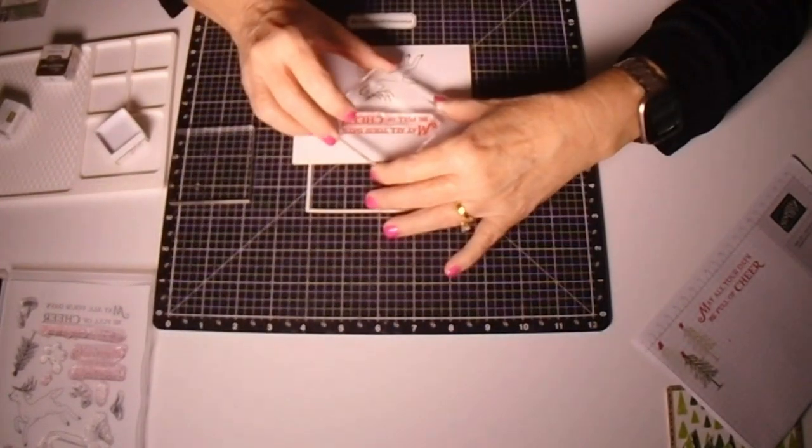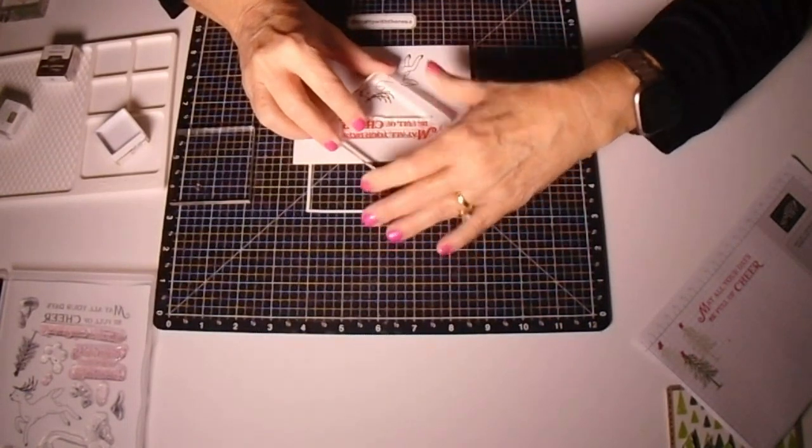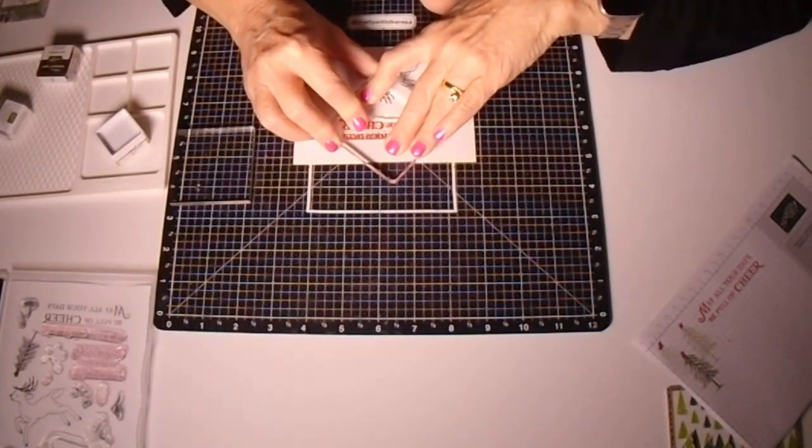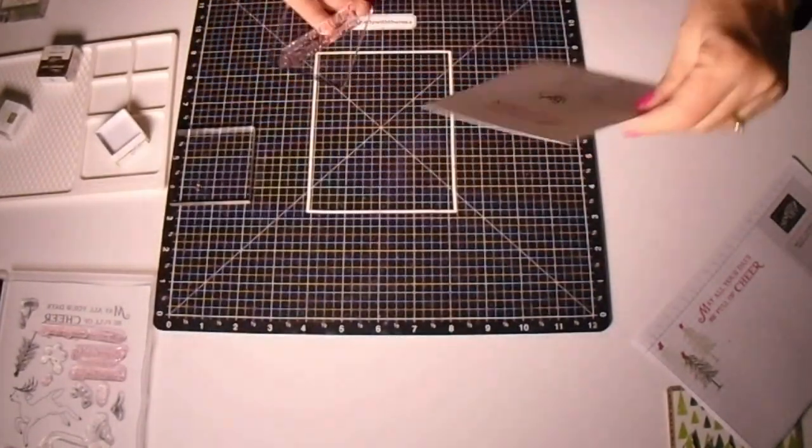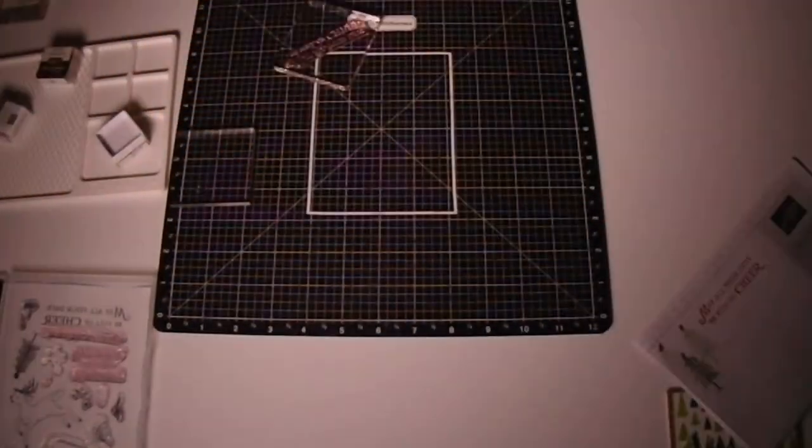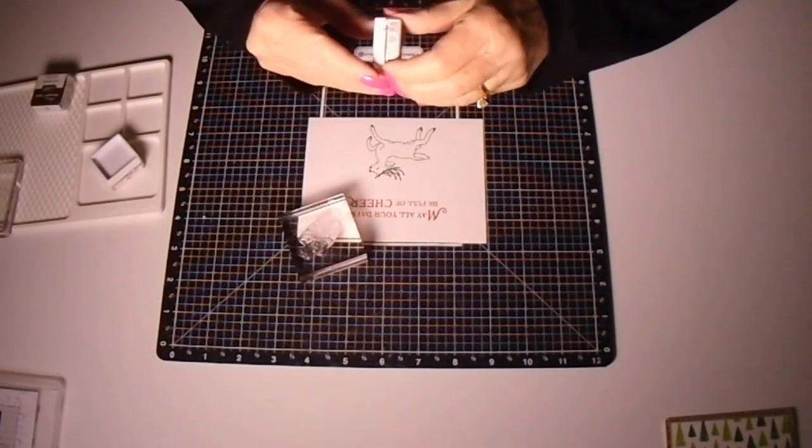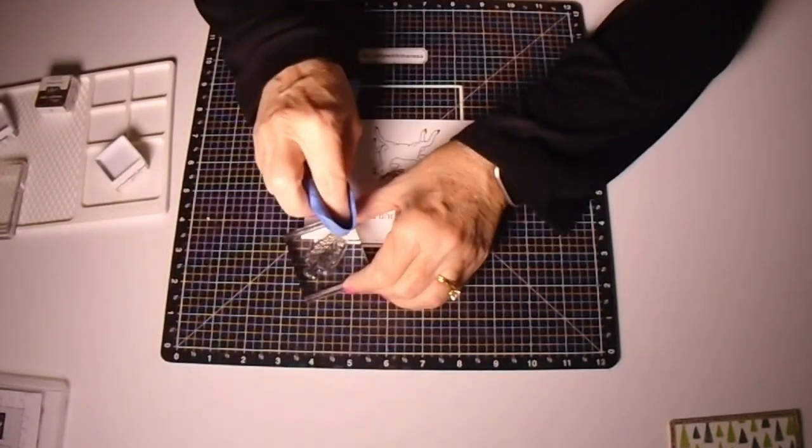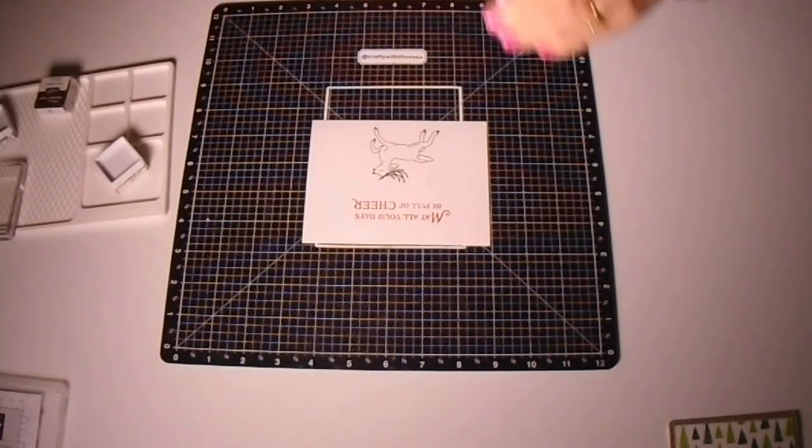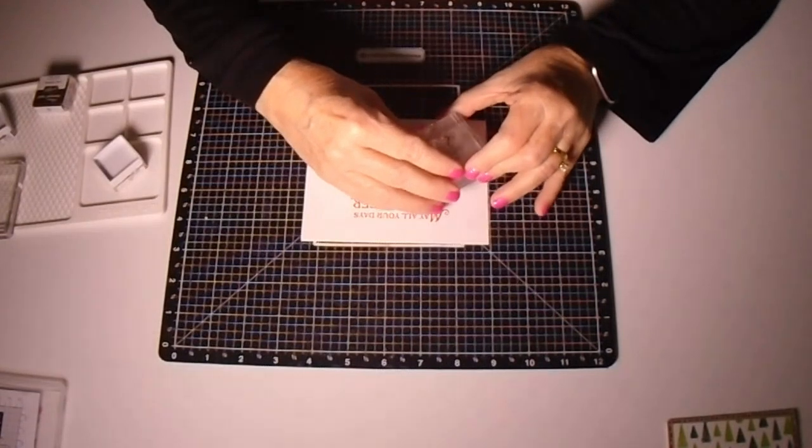So now that we've finished our sentiment, we'll grab that pine tree and we'll use our mossy meadow stamp and spot and dab that ink onto the tree and go ahead and stamp it on our card panel and use the method we talked about which was full strength and stamping off. And we'll just kind of come up with a cute little landscape design.